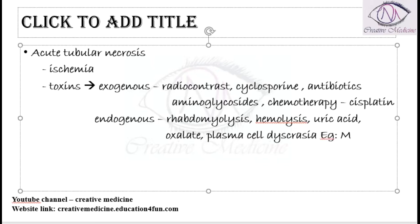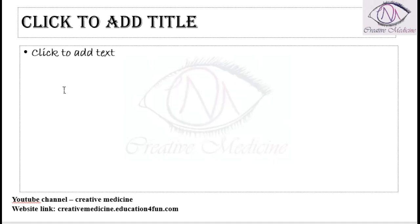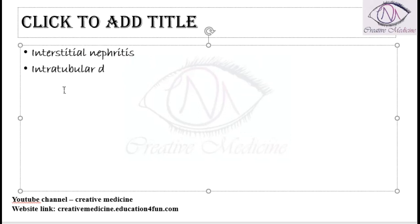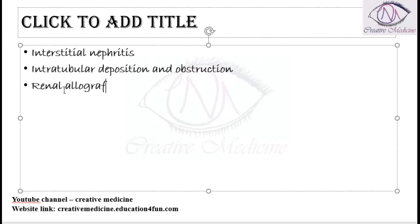Plasma cell dyscrasias include, for example, myelomas. Other causes of intrinsic renal failure include interstitial nephritis, intratubular deposition and obstruction, and renal allograft rejection. These are the different causes of intrinsic renal failure.